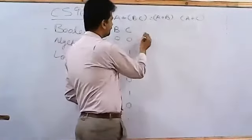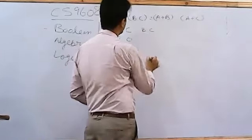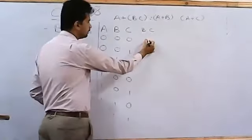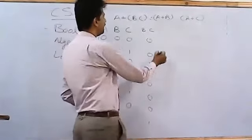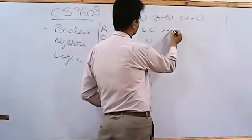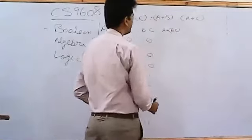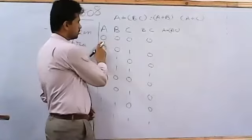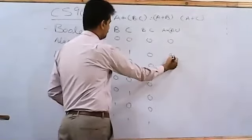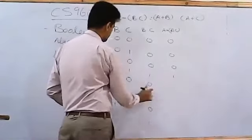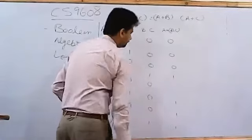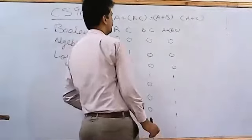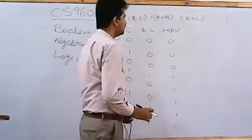Now, I have to find B dot C. So, these are the columns of B and C, so it can be 0, this would be 1, and this is 1. Now, add A into B dot C. This is the A, 0 plus 0, and 0, 0 plus 0, 0 plus 1 is 1, 1 plus 0, 1 plus 0, 1 plus 0, and 1 plus 1.